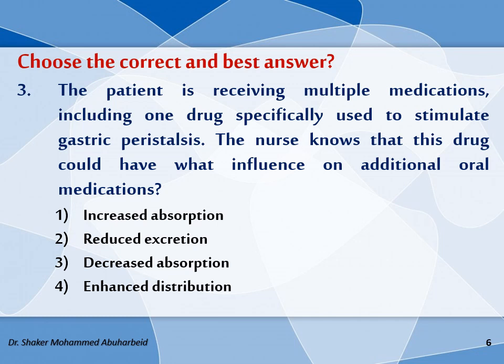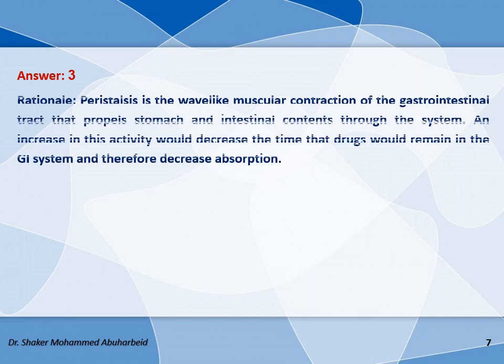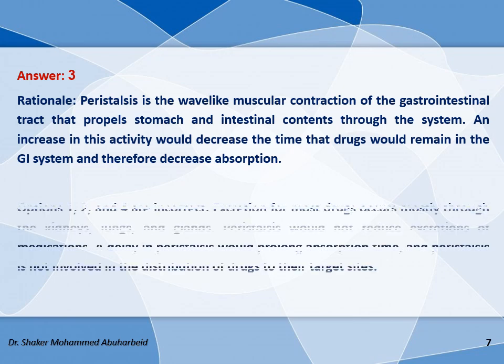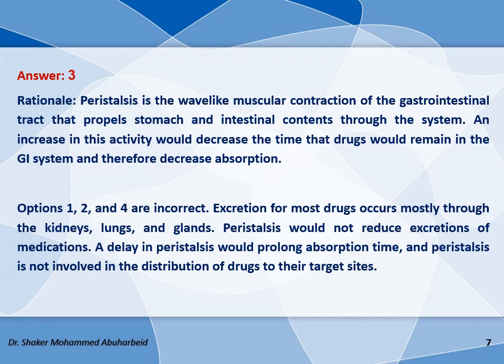The correct answer is option number three. Peristalsis is the wave-like muscular contraction of the gastrointestinal tract that propels stomach and intestinal contents through the system. An increase in this activity would decrease the time the drug remains in the GI system and therefore decrease absorption. While options 1, 2, and 4 are incorrect: excretion for most drugs occurs mostly through the kidneys, lungs, and glands — peristalsis would not reduce excretion. A delay in peristalsis would prolong absorption time, and peristalsis is not involved in the distribution of drugs to their target sites.